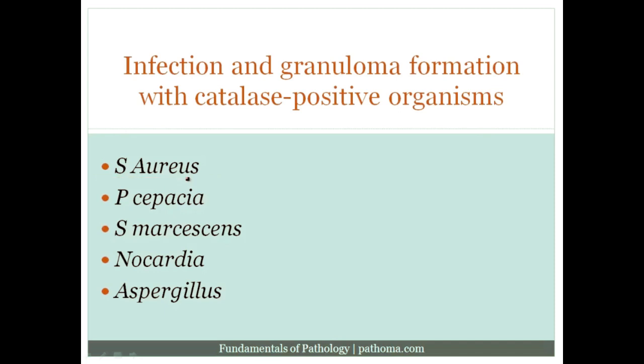More important, in my opinion, is Pseudomonas cepacia. Pseudomonas cepacia is another important catalase-positive bug that can result in infections. Because staph aureus is almost known by every medical student, examiners like to go after Pseudomonas cepacia. Do not forget Pseudomonas cepacia in the context of chronic granulomatous disease. All of this is high yield — it ties together biochemistry and microbiology with pathology.